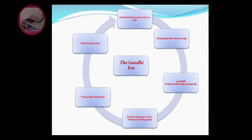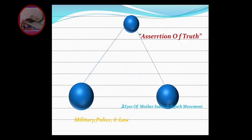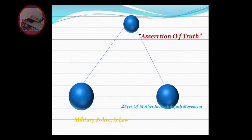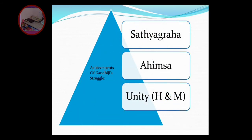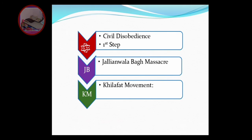The Rowlatt Act was passed in order to quell the rebels in Bengal. They are named after the minister - the Rowlatt Act. The achievements of Gandhiji include satyagraha, ahimsa, and unity of Hindus and Muslims. For satyagraha - assertion of truth; for ahimsa - Mother India; the Khilafat movement; and military, police, and laws for unity of Hindus and Muslims. Then civil disobedience, Jallianwala Bagh massacre, and Khilafat movement - these are all important points.